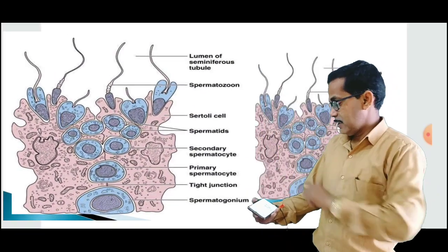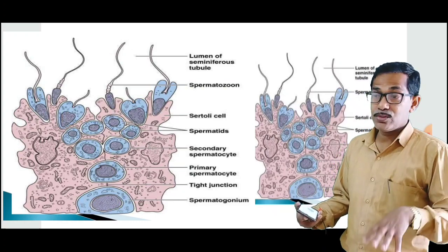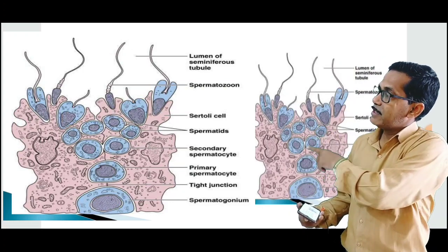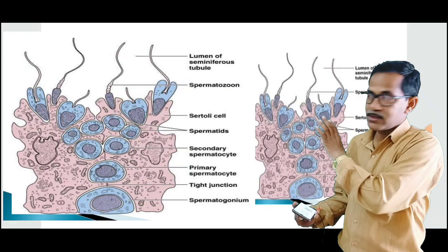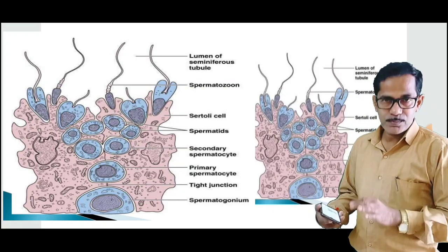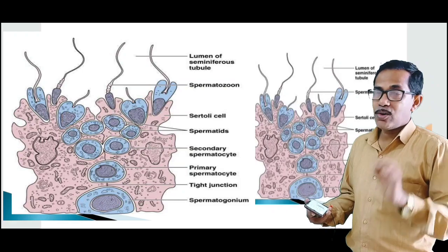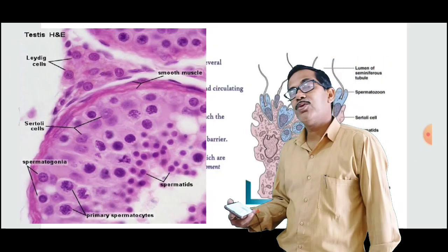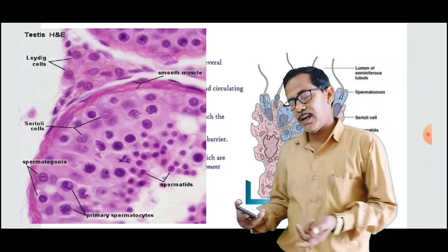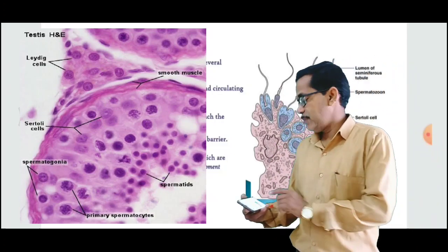In the diagram, we can see where the different cells are — the germinal epithelium cells — and how they get nourishment, as shown in this diagram. We can see how germinal cells are formed, which further grow into sperm, taking nourishment from certain cells. In the endocrine glands, there are Leydig cells, which help in the formation of sperm and also bring about secondary sexual characters in males.